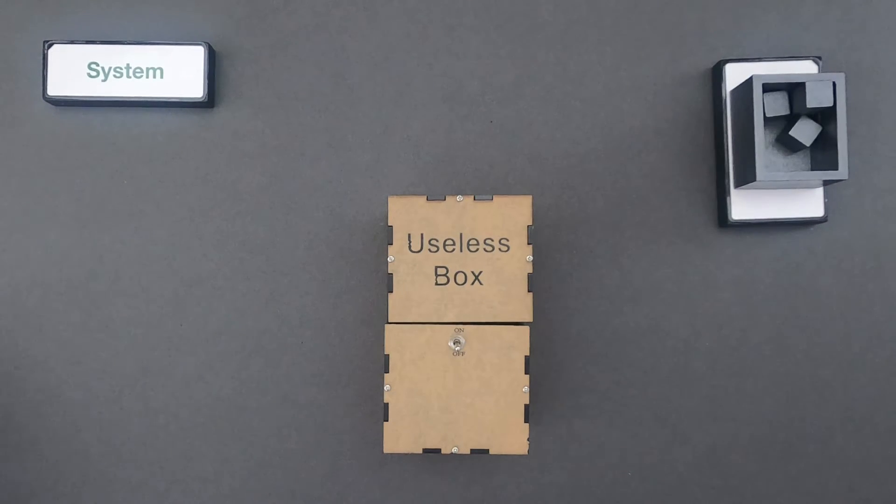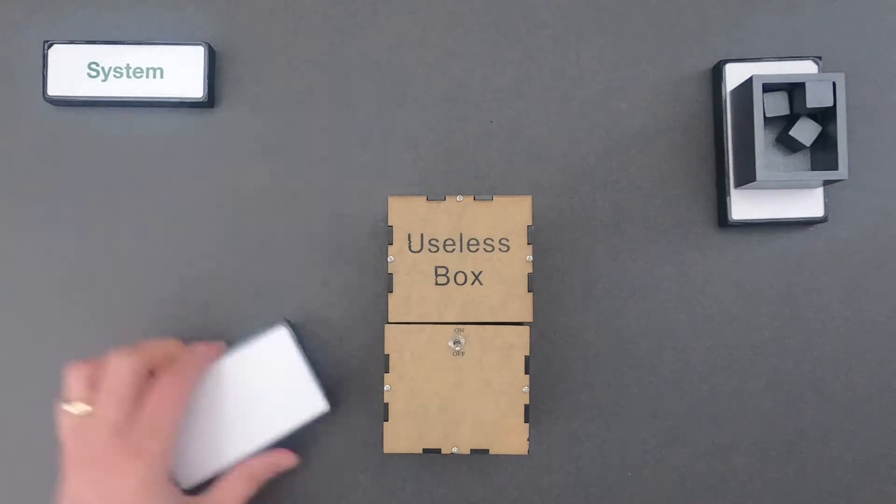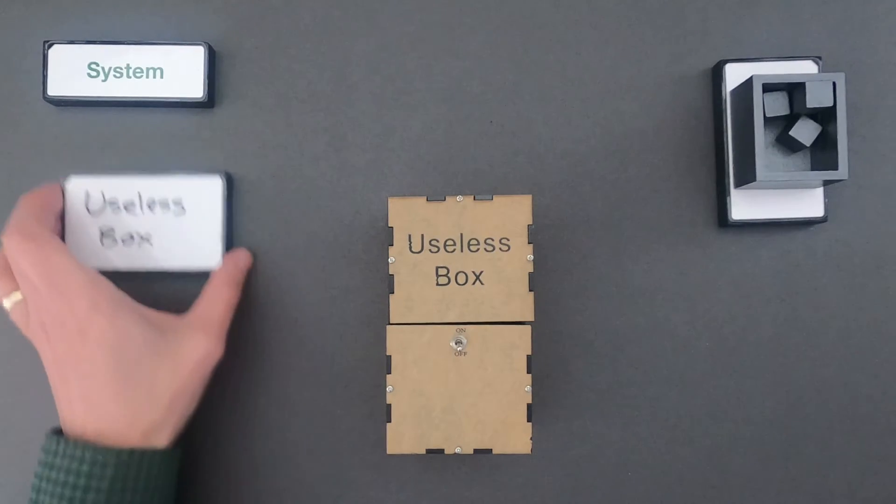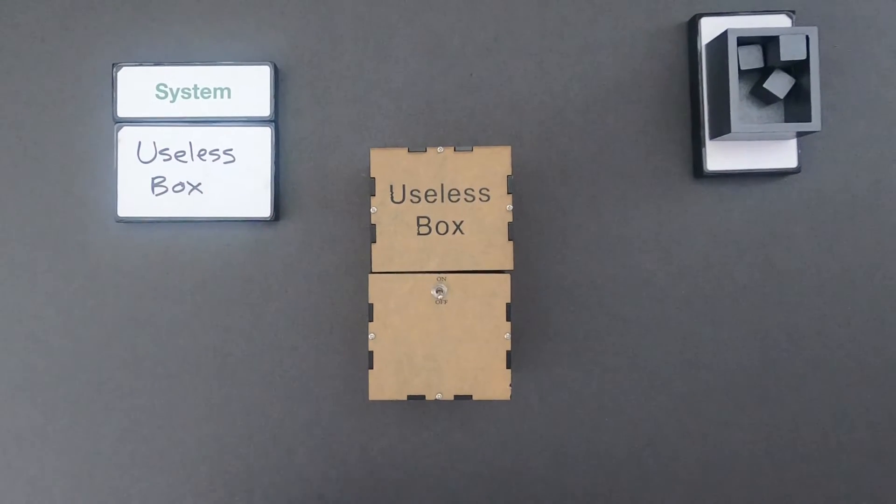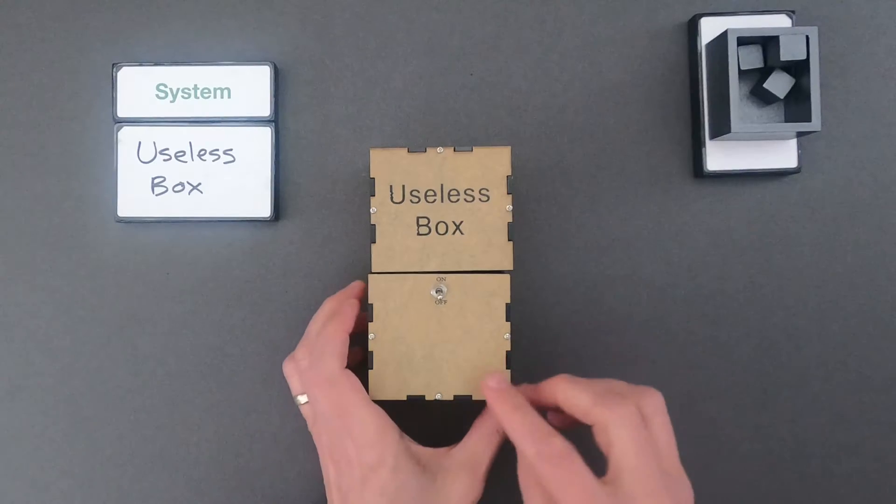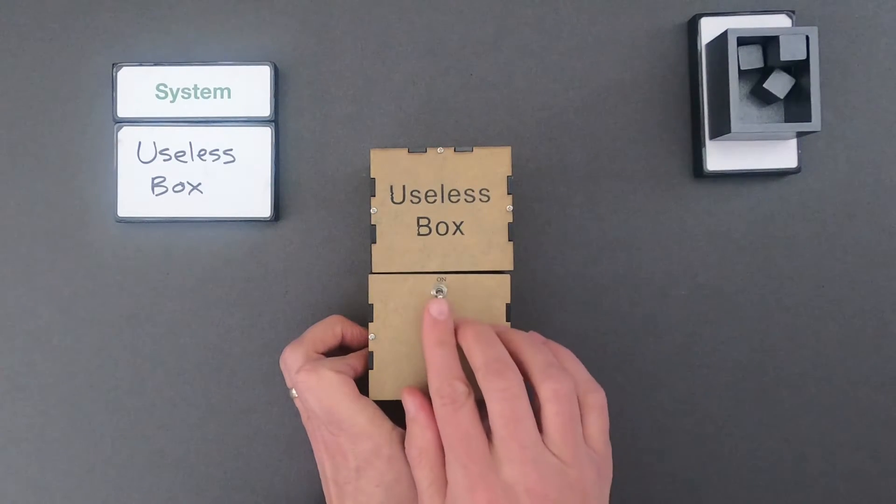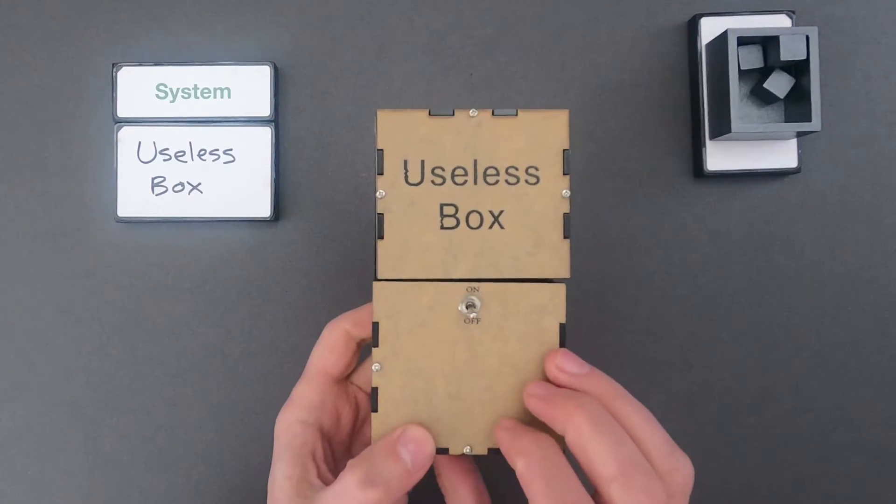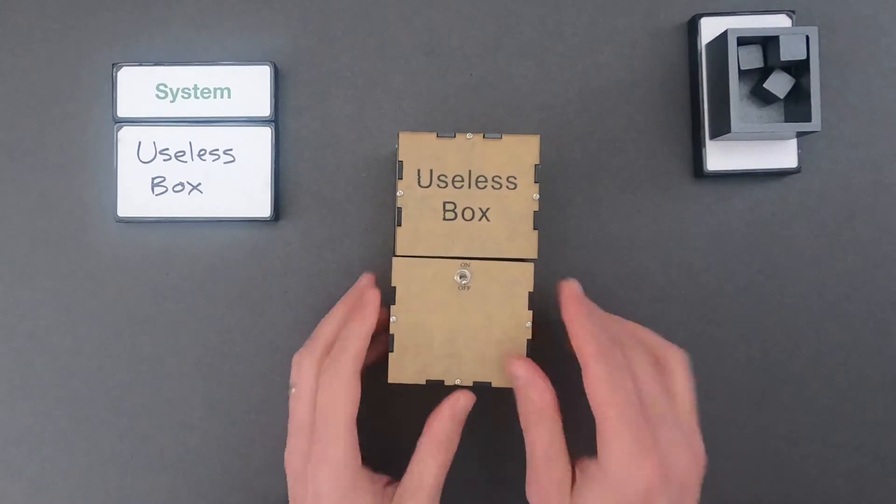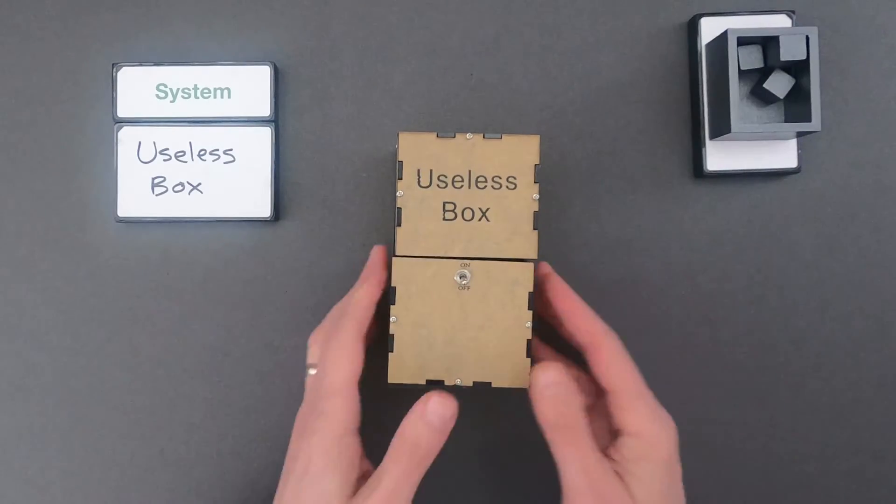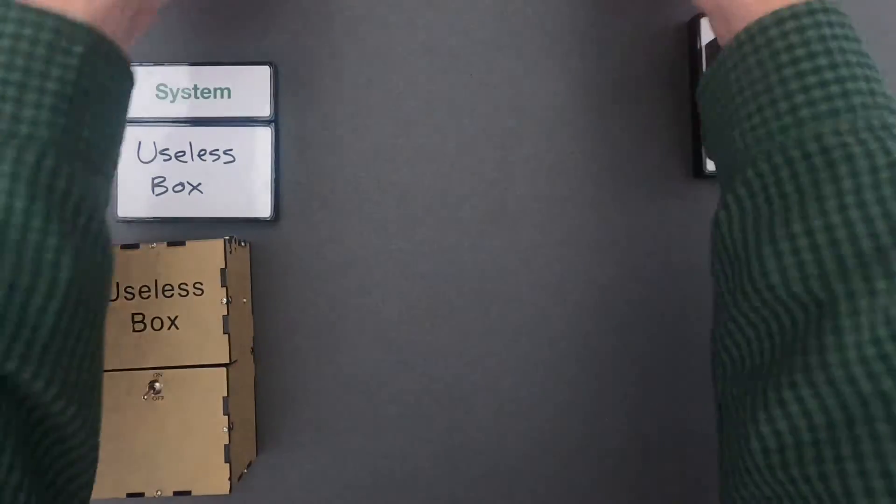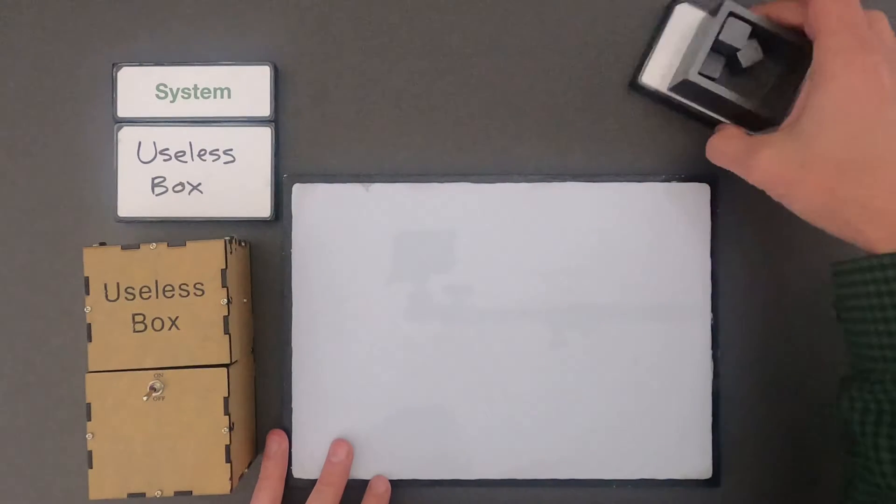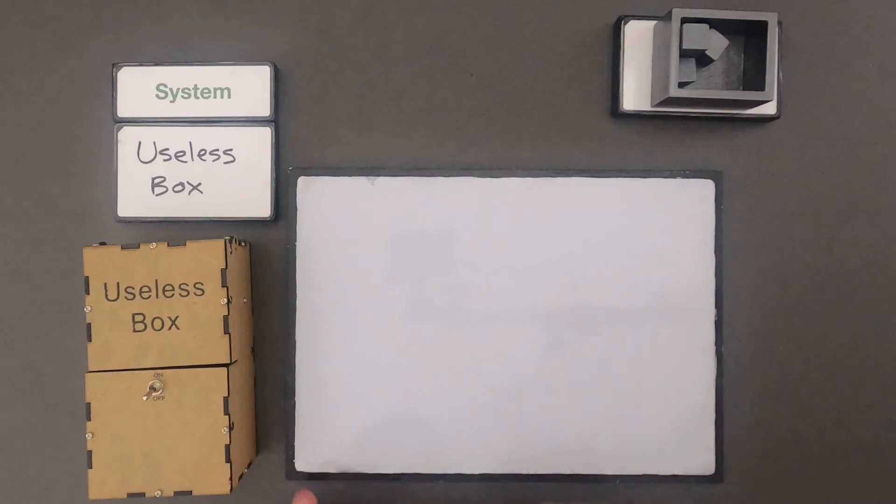So as always the first thing we should do is define the system. So in this case the system is the useless box. The way the useless box works is that when I turn it on it will just simply turn it off again. So when I turn the switch on there's a mechanical monster on the inside that's simply turning that switch off. So that's going to be the system that we're going to try to simulate. And so this whiteboard is going to represent the system.